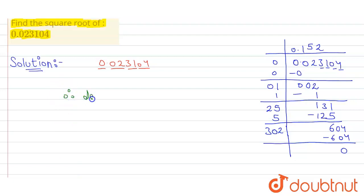Therefore, the square root of 0.023104 is 0.152.